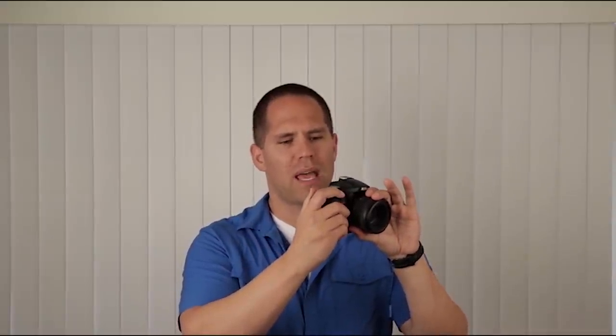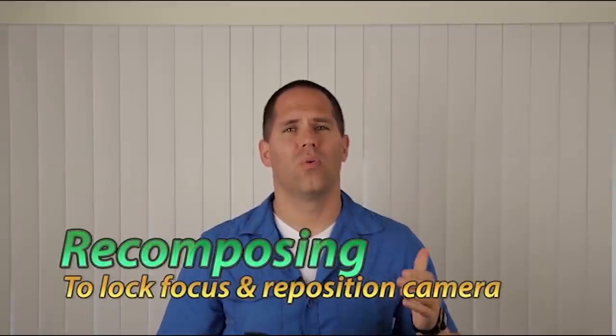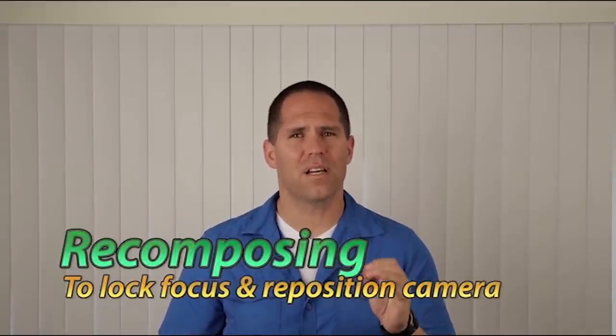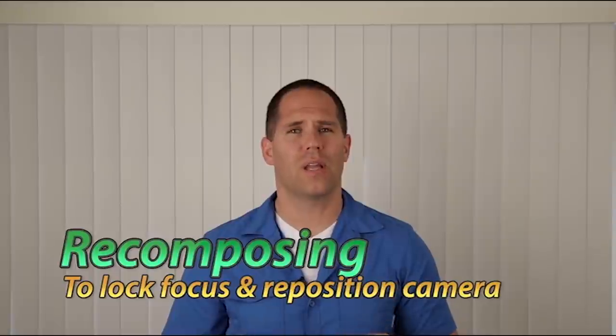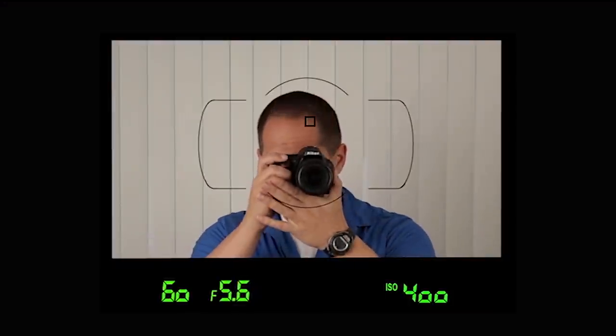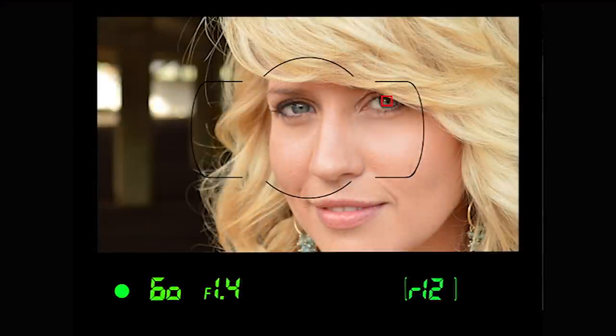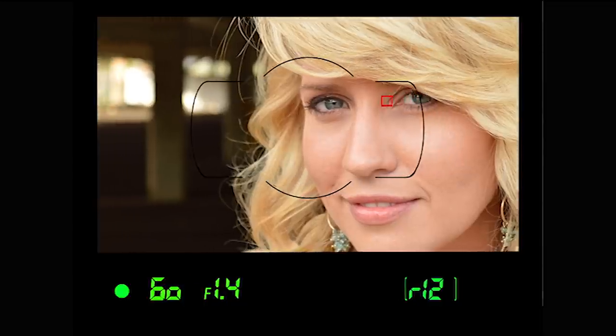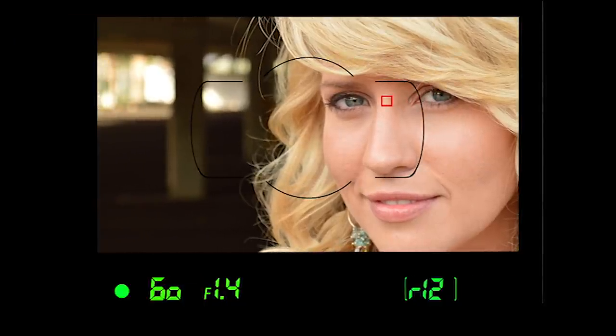Now I don't want to get into it too much right now, but the idea of focusing, holding the shutter button down, and moving the camera is called recomposing. It's a very important skill that you're going to have to learn where you can get something in focus, lock that focus holding the shutter button halfway down, and move the camera to recompose and make it more aesthetically pleasing.